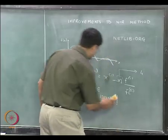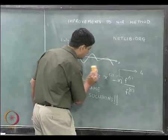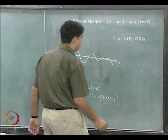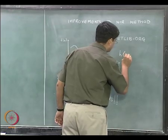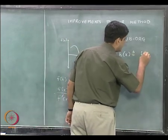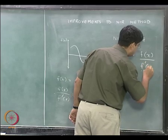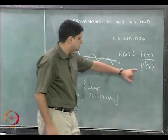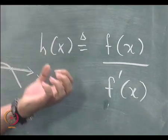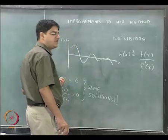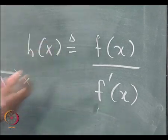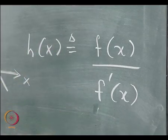So what these researchers did is, instead of using the original approach, they defined a new function h(x), defined as h(x) = f(x) / f'(x). This is going to be our h(x), and now the objective is changed: instead of finding the solution of f(x), the objective is now to find the solution of h(x), and that becomes a new problem.